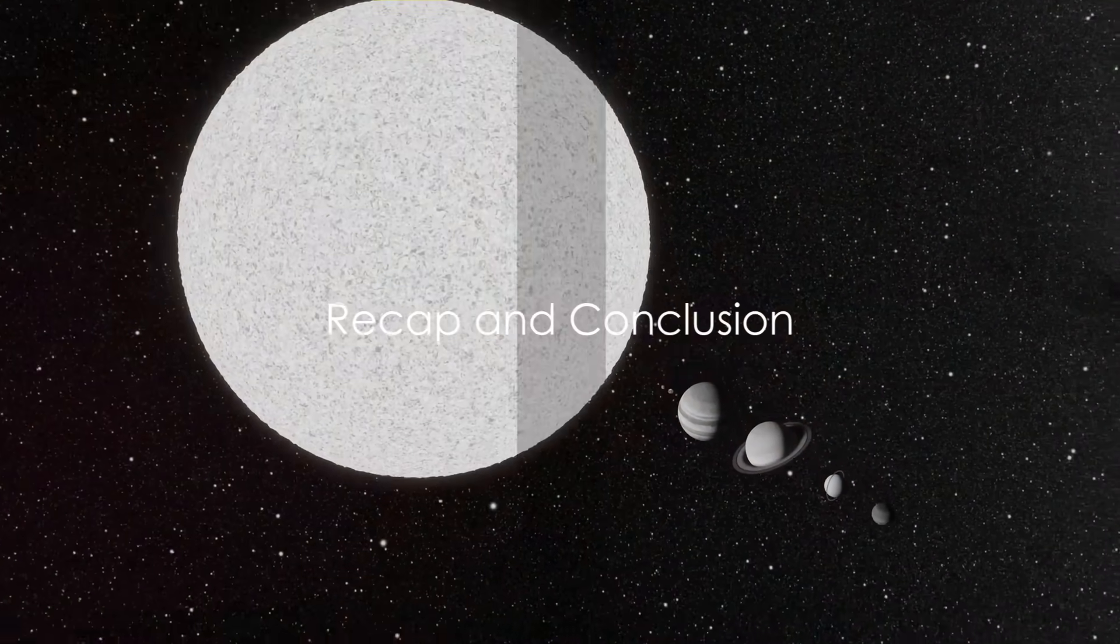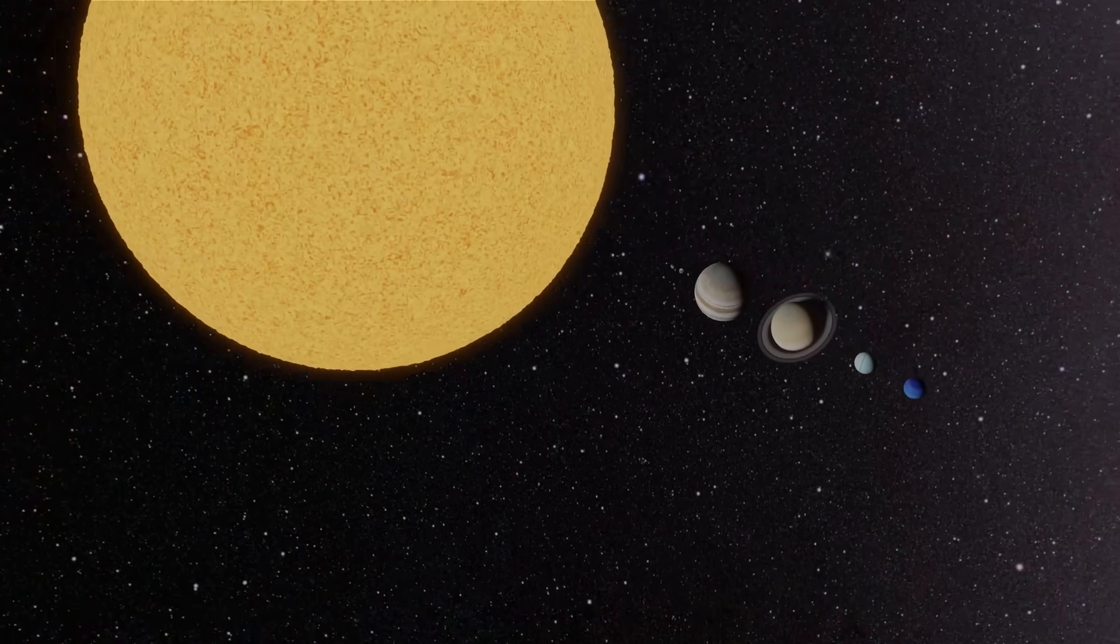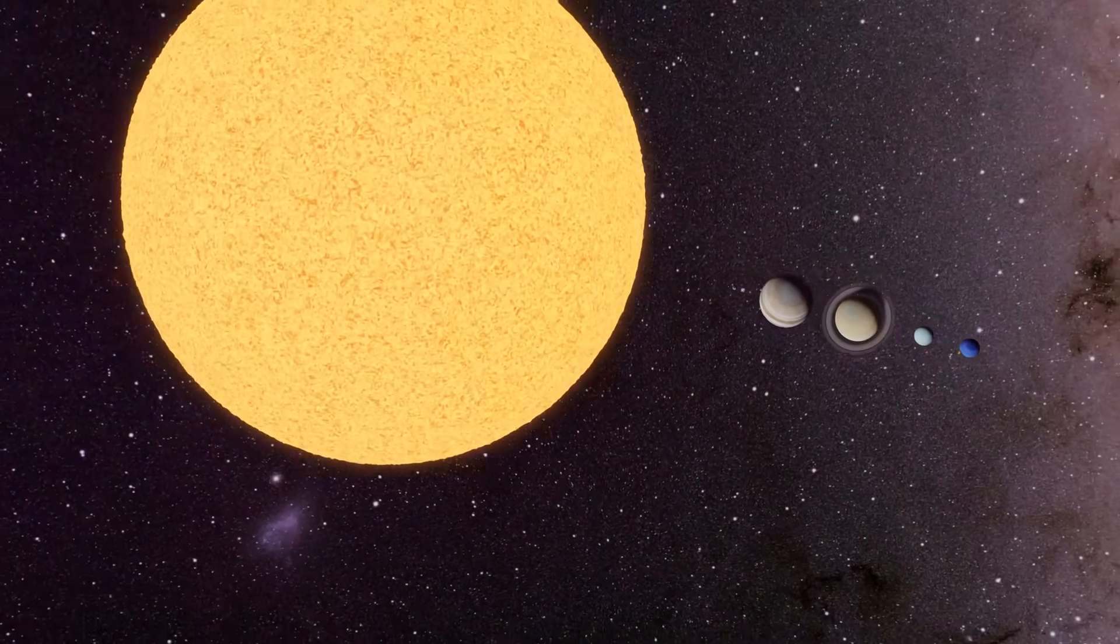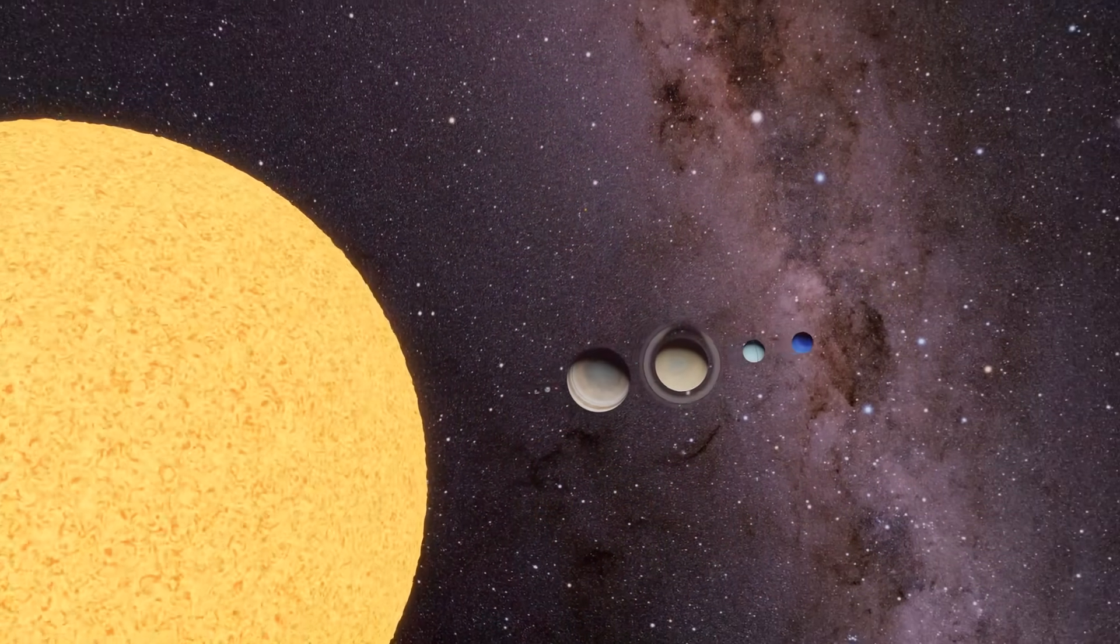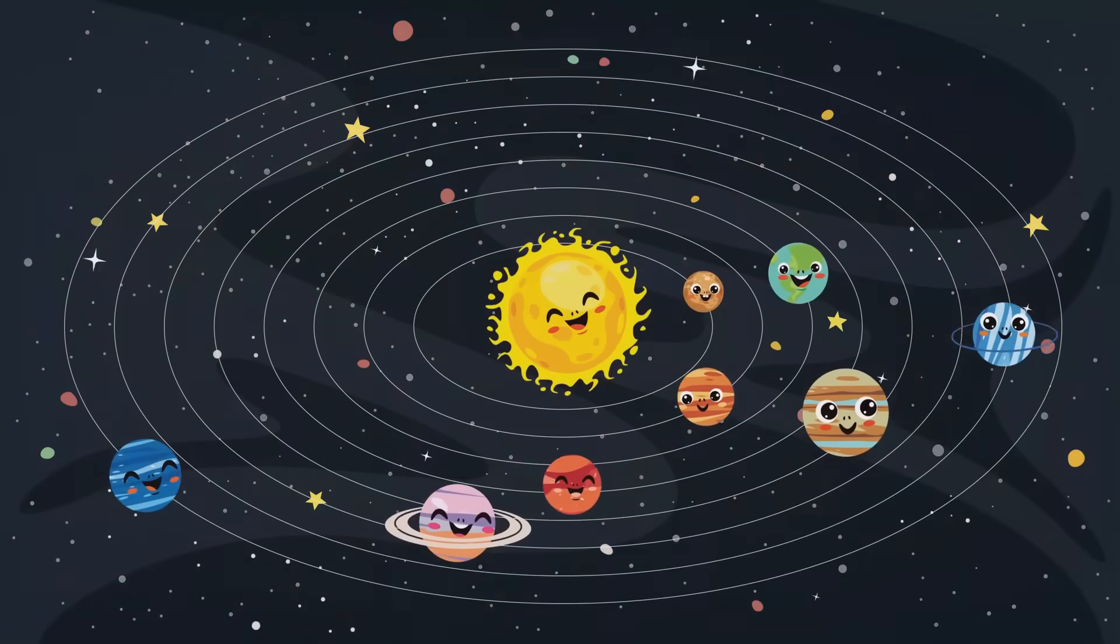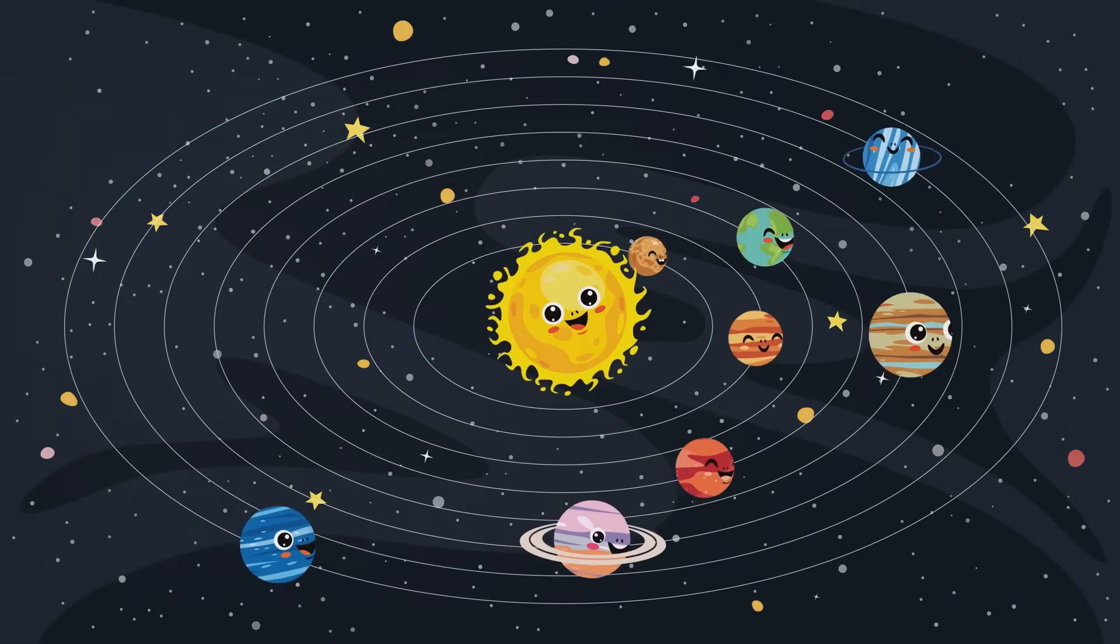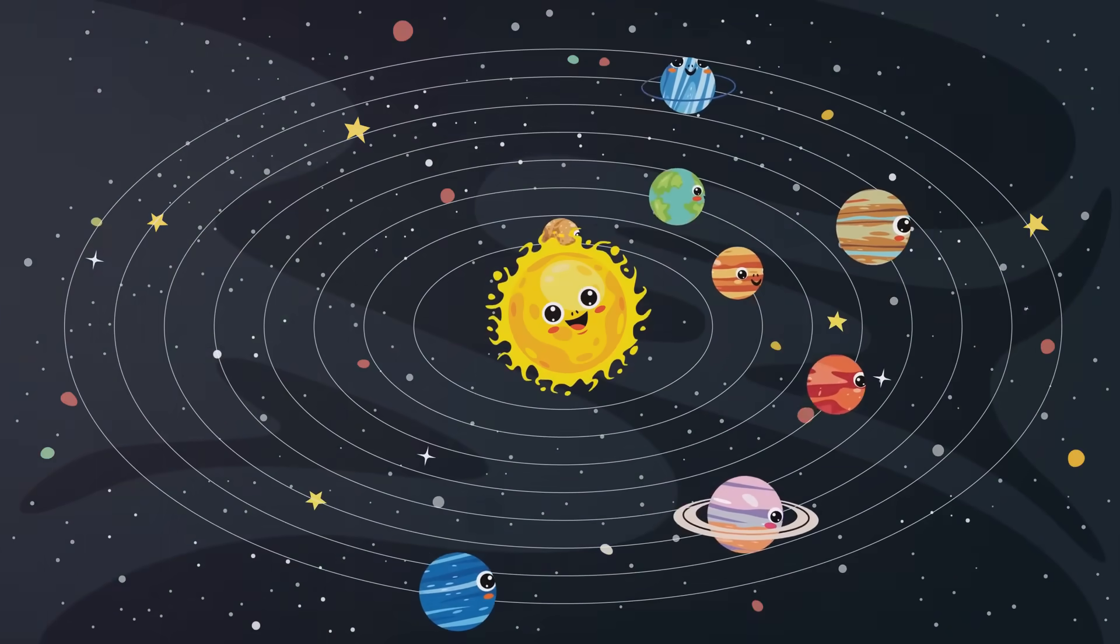We've covered a lot of ground, so let's quickly recap. Our journey today has taken us to the far reaches of our solar system, to a mysterious place where the sun's influence wanes, and the cosmic wilderness begins. This is the realm of the helio tail, a fascinating and often overlooked feature of our solar system.